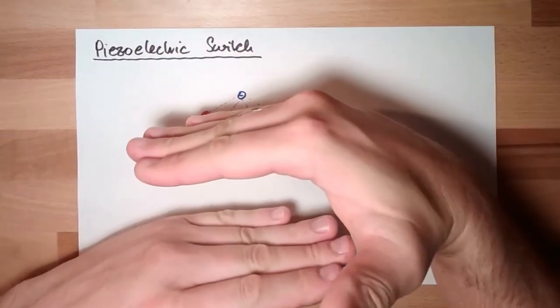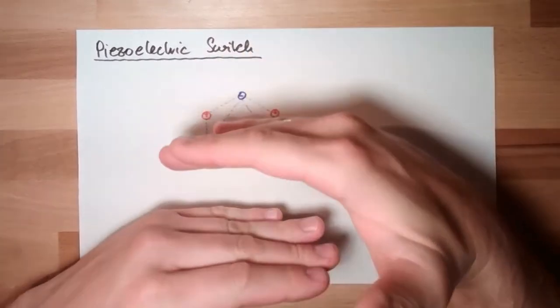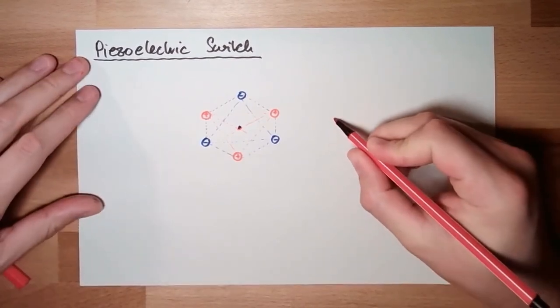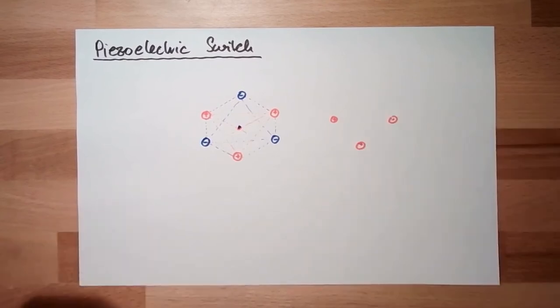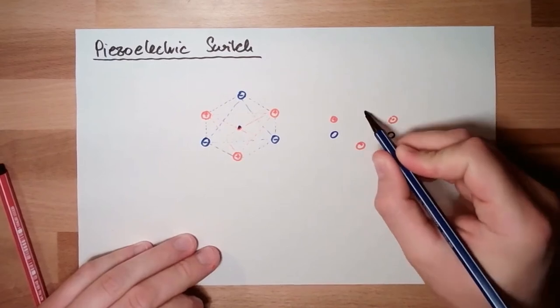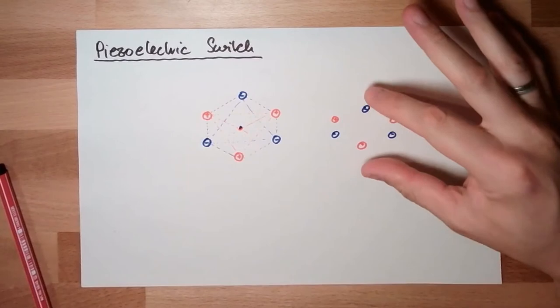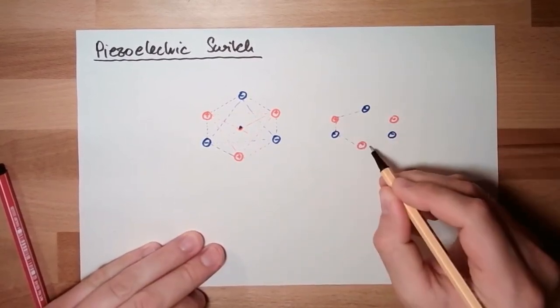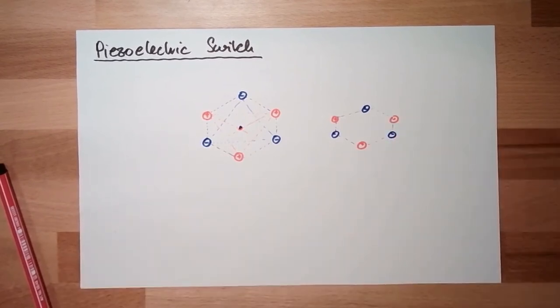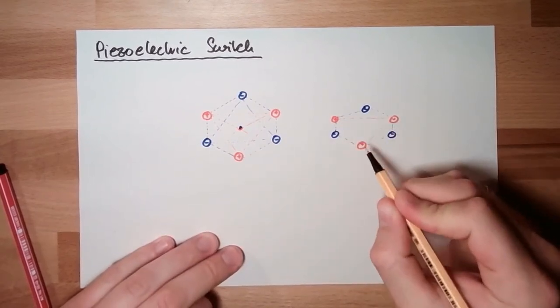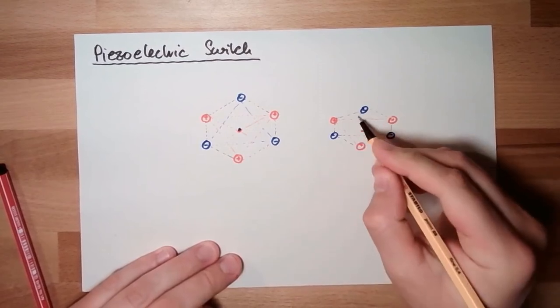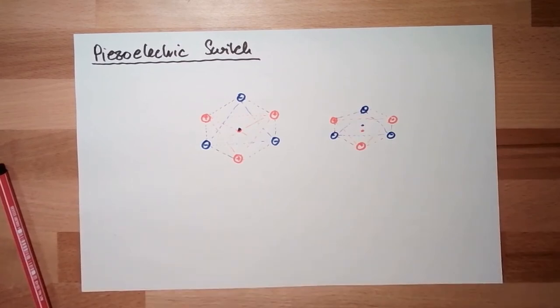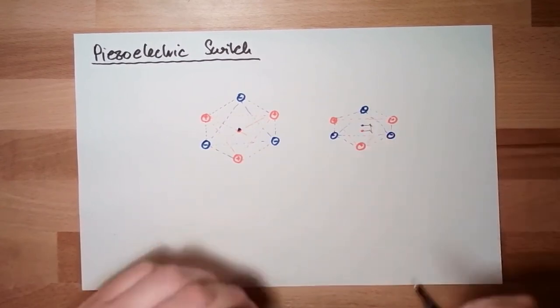Now apply some force. Suddenly the crystal is deforming, which means the plus things are moving together, and the minus are also moving together. This crystal now seems to be pressed together. If I'm now looking at the balance point of these charges, I realize one is here and the other one is here. It moved. The balance point moved. And suddenly I have here a distance between the two balance points, the positive and the negative balance points.